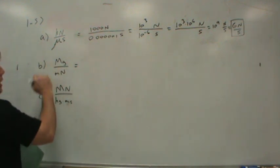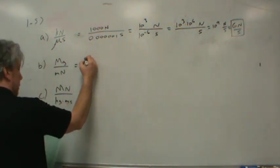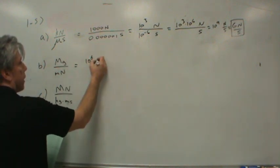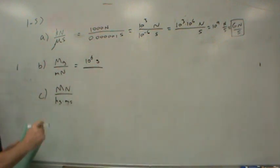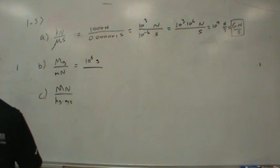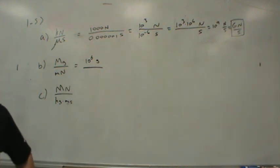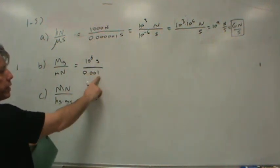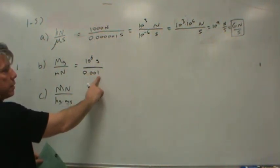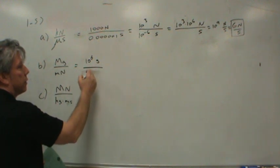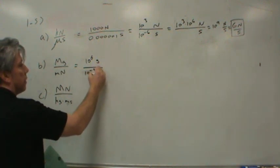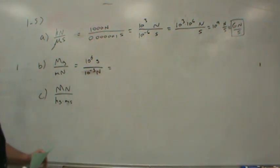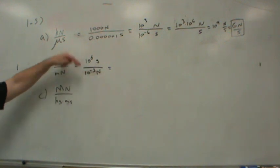Help me out with this one. Mega is ten to the sixth. We've got grams. Milli, M-I-L-L-I. Anybody know that one? It's a thousandth. So zero point zero zero one. Another way to write this? Ten to the negative third. Okay. So same rule as before. Ten to the negative third in the denominator is ten to the third in the numerator.